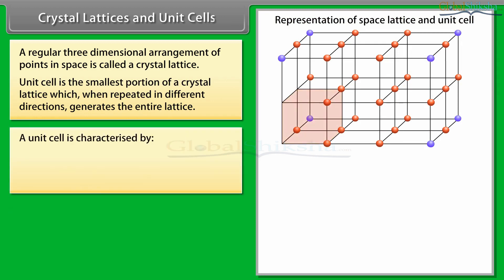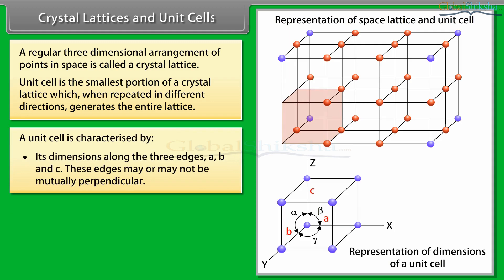A unit cell is characterized by its dimensions along the three edges A, B, and C. These edges may or may not be mutually perpendicular.